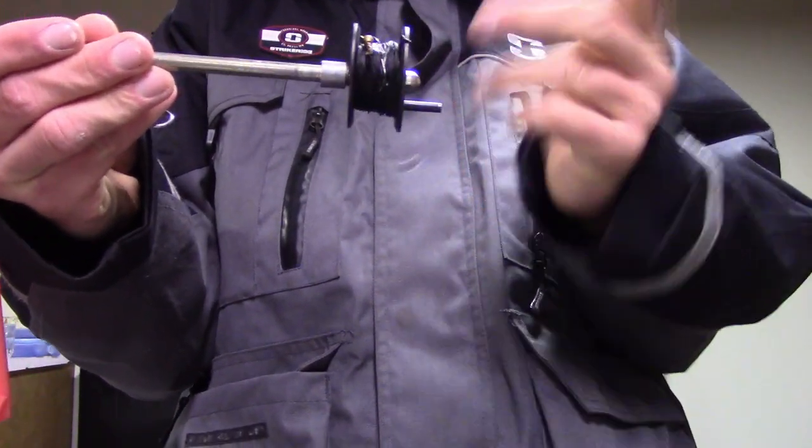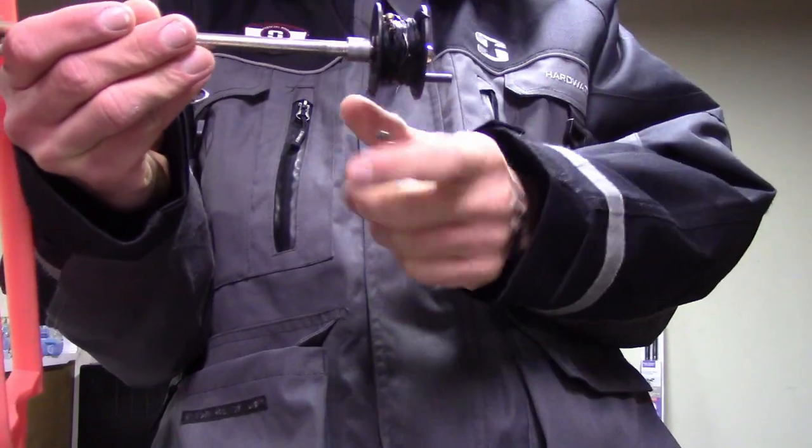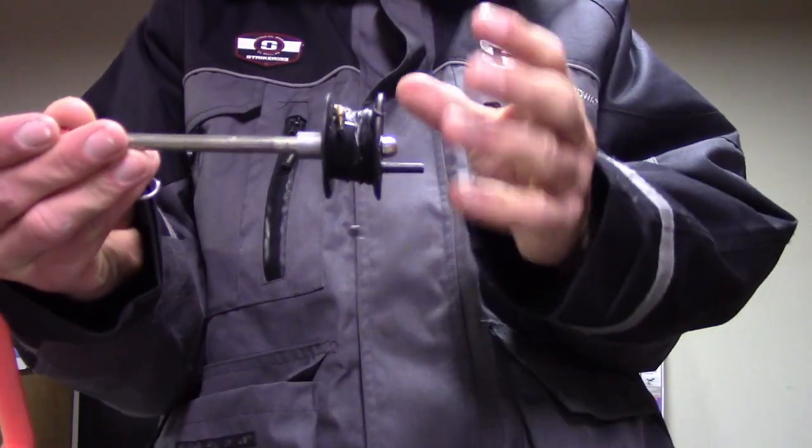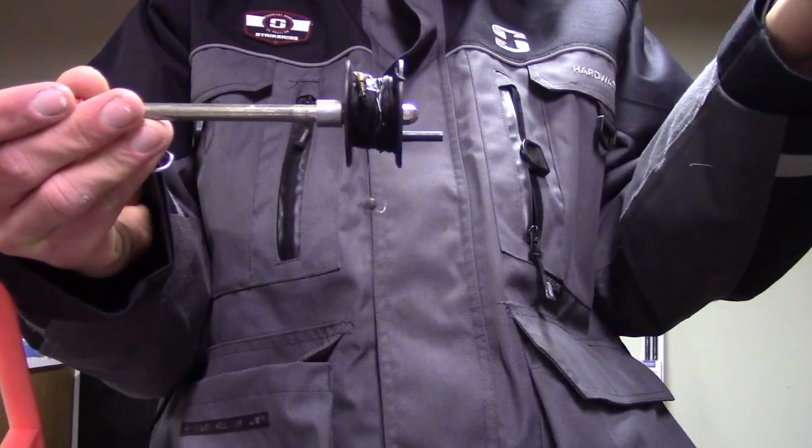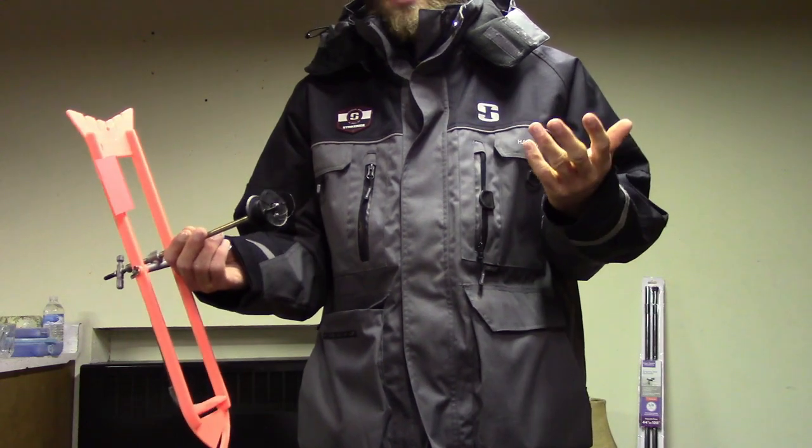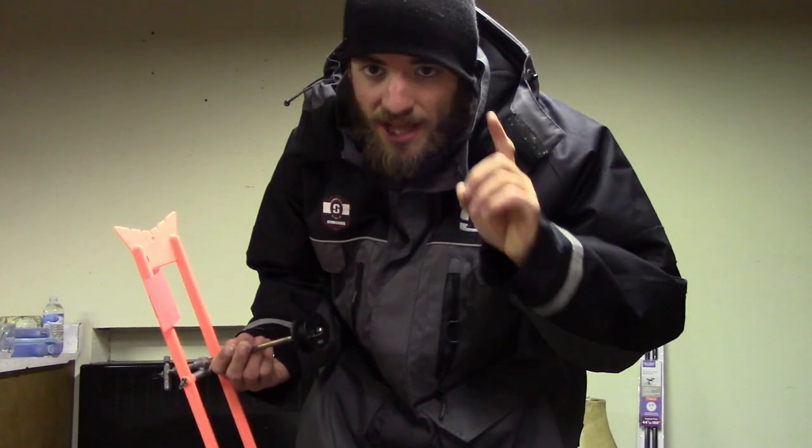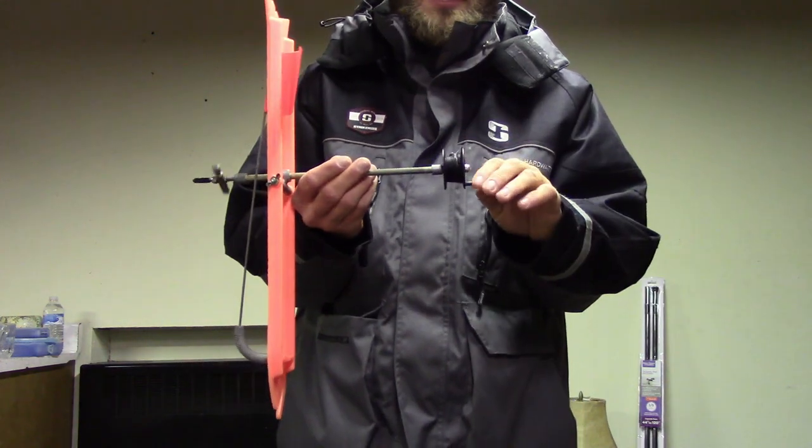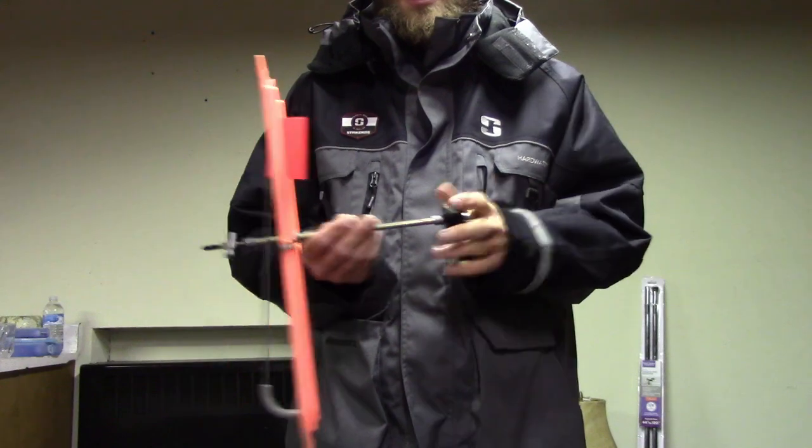You want this spool to spin fast with very little resistance. When the fish pulls on it, when the fish takes your bait, you don't want them to feel the reel. You want them to feel your bait and swim away just like it's natural. Some fish are very shy when it comes to resistance. Something like a walleye or a trout, especially steelhead and lake trout, if they even feel that little bit of resistance, they'll drop your bait and you're not going to catch the fish.